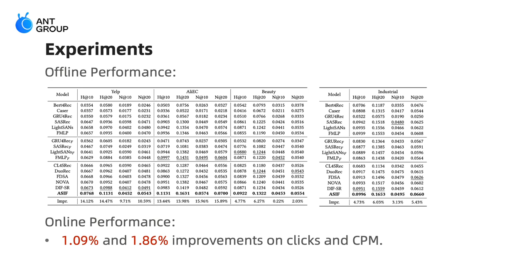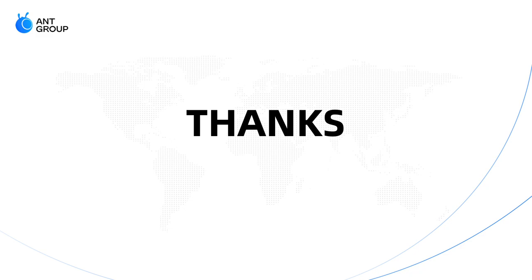Then we present the experiments. Offline performance is evaluated on three public and industrial datasets. It's clear to see that our method achieves significantly better results than other state-of-the-art baselines. Additionally, we successfully deployed it in Alipay's advertising system, and after a two-week online A/B test, it achieves 1.09% and 1.86% improvements on clicks and cost per mile. That's all. Thanks.